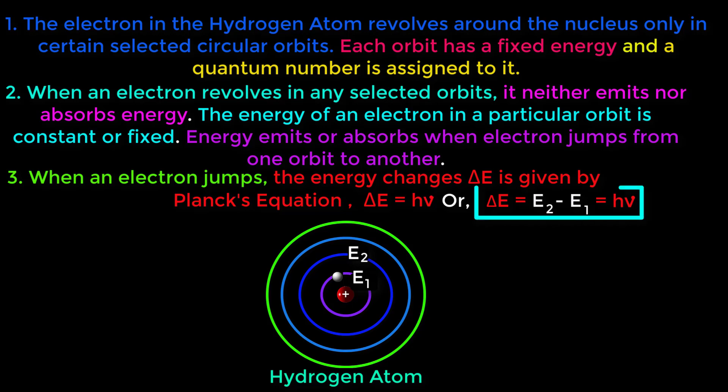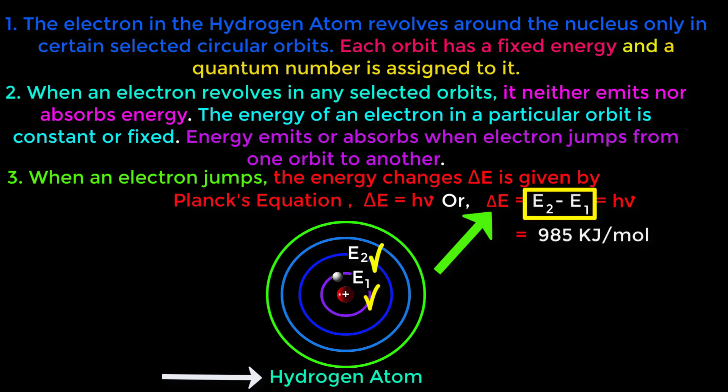From this equation, we will be able to find out how much energy is absorbed or how much energy is emitted. The difference of energy of these two orbits in hydrogen atom, that is ΔE, equals 985 kilojoule per mole.